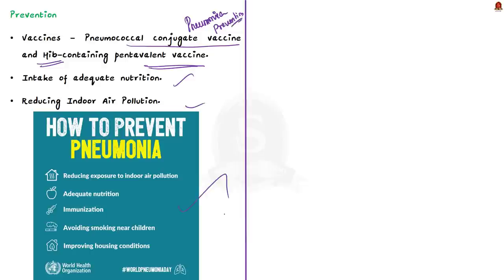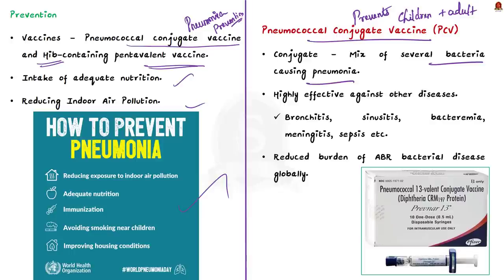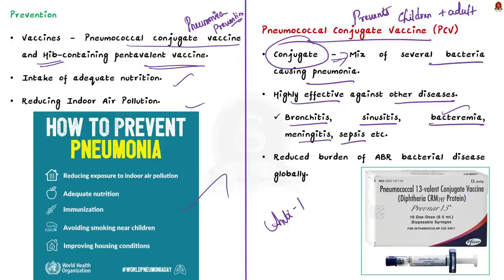The pneumococcal conjugate vaccine can protect both children and adults from pneumococcal disease. This vaccine contains a mix of several bacteria of the pneumococcal family which causes pneumonia — hence the term 'conjugate' is included in its name. This vaccine is also highly effective against other diseases like bronchitis, sinusitis, meningitis, sepsis, and bacteremia. Pneumococcal conjugate vaccines have also reduced the burden of antibiotic-resistant bacterial disease globally, as stated in a Lancet study report from 2017.